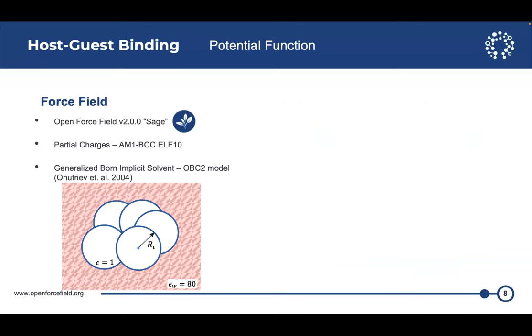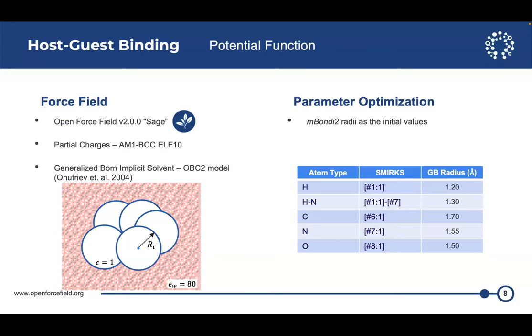To test this, we use the OpenFF Sage 2.0.0 as the force field. The partial charges, we use AM1-BCC ELF10 using the OpenEye toolkit. And for the generalized Born with solvent, we just selected the OBC2 model. So without getting too much into details, the generalized Born with solvent treats each atom as a van der Waals sphere embedded in a continuum medium. So the larger the radius, the less solvated the atom becomes. And the smaller the radius, the more solvated the atom becomes. For the radii, as the initial values, we use the MBondi2 radii set. Basically, this is a five-atom type base. Four of them are the elements: hydrogen, carbon, nitrogen, and oxygen, with an extra type for a hydrogen atom bound to a nitrogen atom. And we want to optimize all five of these radii.